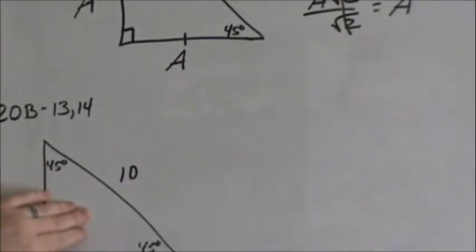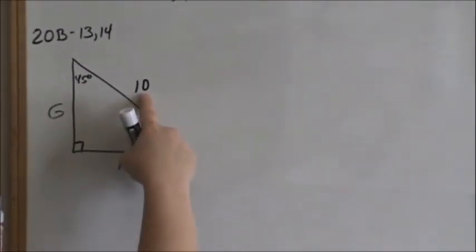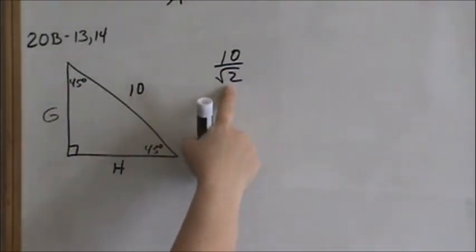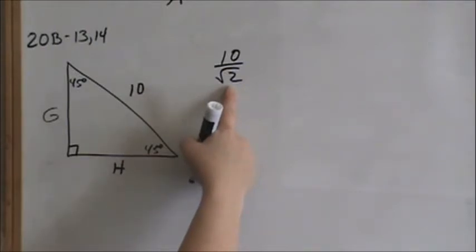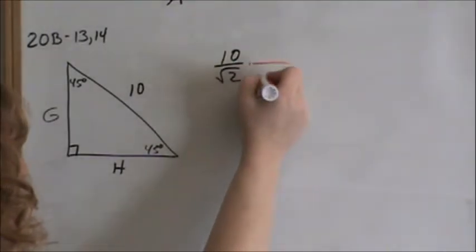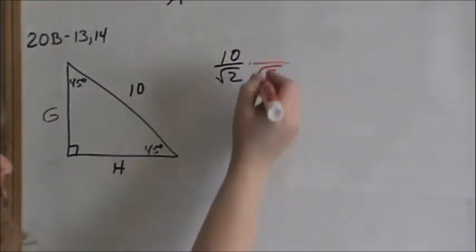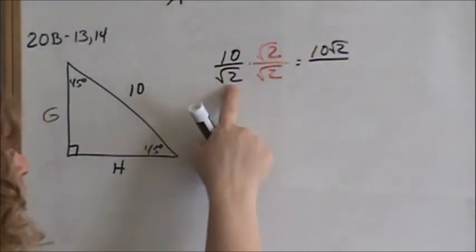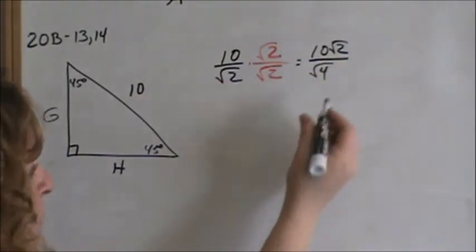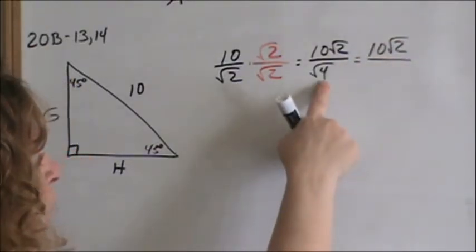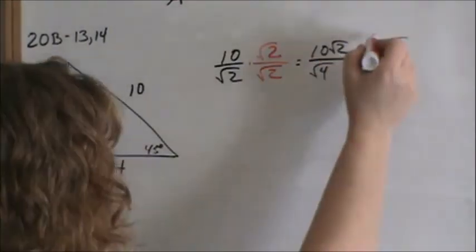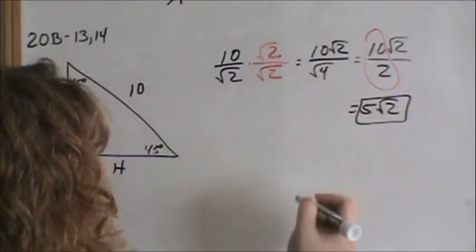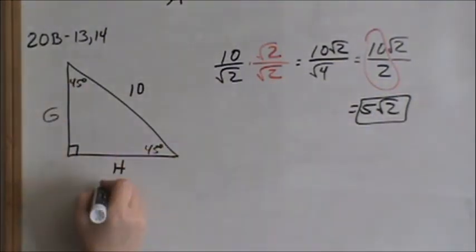On 20B, 13 and 14, we are given the hypotenuse of 10. We need to divide by square root of 2 in order to find the legs. Can we leave radicals in the denominator? No. So we have to get rid of the radical in the denominator by multiplying it by square root of 2. Whatever we do to the denominator, we have to do to the numerator. Now we're multiplying fractions — just multiply across: 10 times square root of 2 is 10 square root of 2, and square root of 2 times square root of 2 is square root of 4. Square root of 4 is 2. Now we reduce: 10 divided by 2 is 5, and we leave the radical. So the leg is 5 square root of 2.